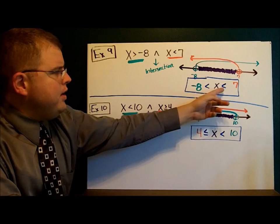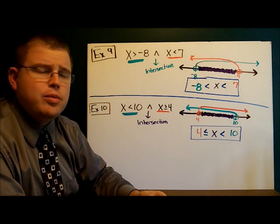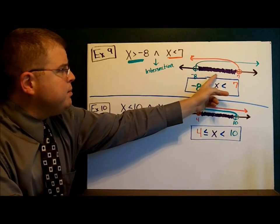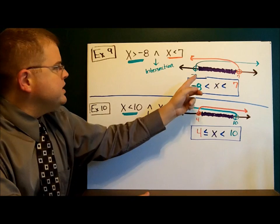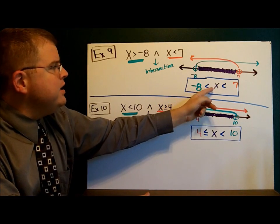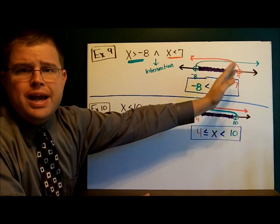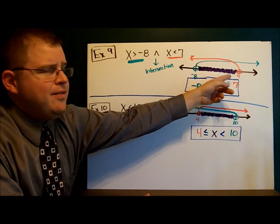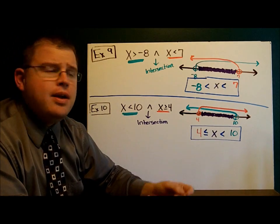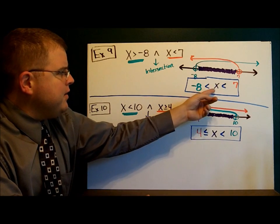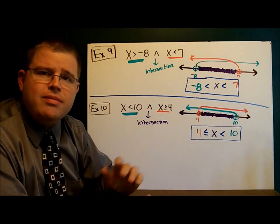Now we simply have to put our inequality symbols in. This is an open circle, so it will not be equal to. The x values — the purple — are bigger than this point, further down the number line to the right, so x is bigger than negative 8 and the inequality opens toward the x. The 7 is way at the end — bigger than any of the shaded values — so the inequality opens toward the 7. Negative 8 is smaller than x, and x is smaller than 7, or x is in between negative 8 and 7. The number line is really your guide.